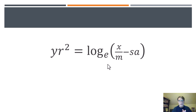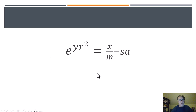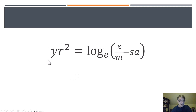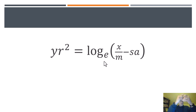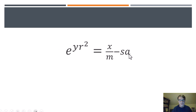Now we need to get rid of this logarithm, and because it's log base e, if we take e and raise both sides to this as a power, here's what happens. We get e to the y r squared — we've raised e to this power — and when we raise e to this side, the log cancels out. It's like that trick where you put your hand in strings and pull it out. So if you take e and raise it to the log of e, the log of e disappears and you're left with x over m minus s a.